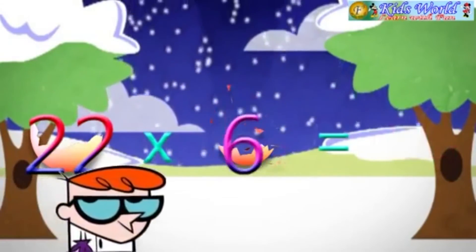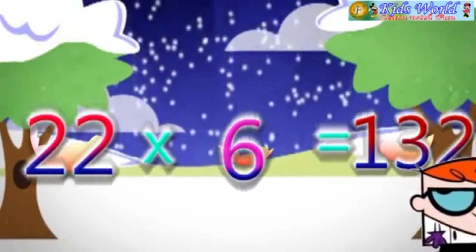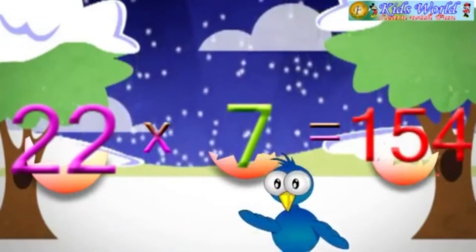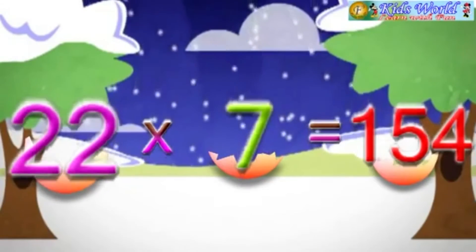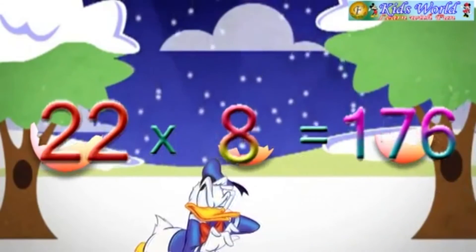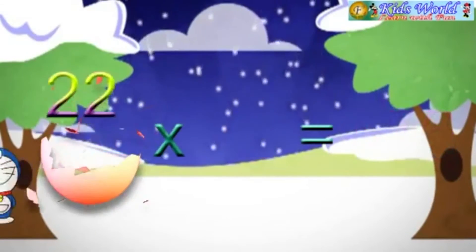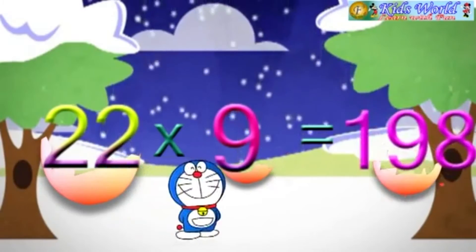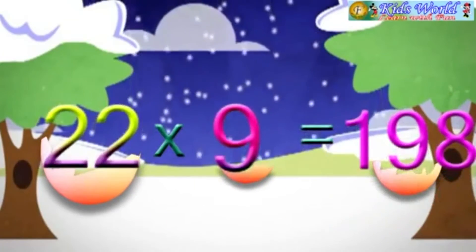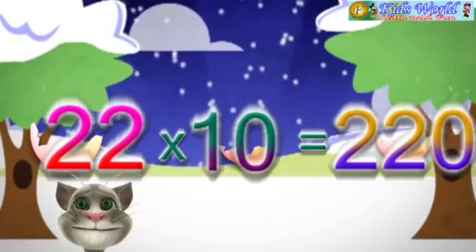22 into 6 is equal to 132. 22 into 7 is equal to 154. 22 into 8 is equal to 176. 22 into 9 is equal to 198. 22 into 10 is equal to 220.